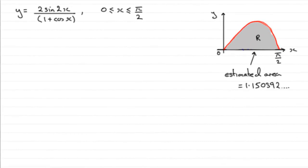Now for this last part we have to calculate the error of our estimate for R which we found earlier, which by the Trapezoidal rule was 1.150392 and so on, to the actual area.